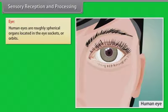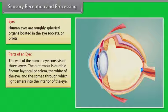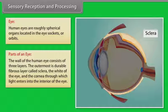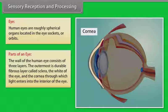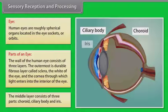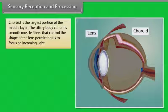Human eyes are roughly spherical organs located in the eye sockets or orbits. The wall of the human eye consists of three layers. The outermost is a durable fibrous layer called sclera — the white of the eye — and the cornea through which light enters the interior of the eye. The middle layer consists of three parts: choroid, ciliary body and iris. Choroid is the largest portion of the middle layer. The ciliary body contains smooth muscle fibers that control the shape of the lens, permitting focus on incoming light.